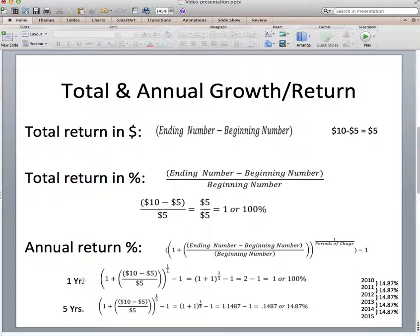But if we're not looking over just one year, we're looking over 5 years of growth, then we're going to use a slightly different formula. All we change is this 5 here. Everything else is the same. And so we take 10 minus 5 divided by 5. Again, it's 1. 1 plus 1, so 1 plus 1 to the 1 over 5 minus that 1.